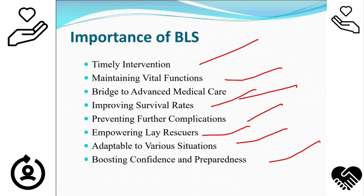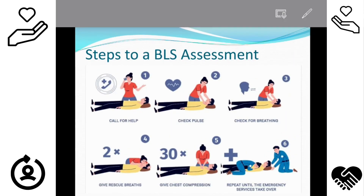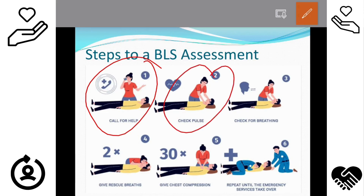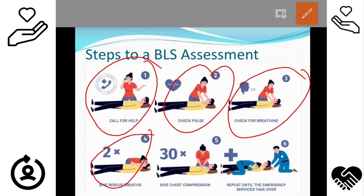Now, regarding the steps: if you have a situation where any individual or patient has respiratory failure or cardiac arrest, first you need to call for help. Second, check the pulse. Third, check the breathing — inhalation and exhalation. Then give rescue breathing, which involves CPR, and then give chest compressions. We need to give 2 rescue breaths and then chest compressions, as shown in the diagram.